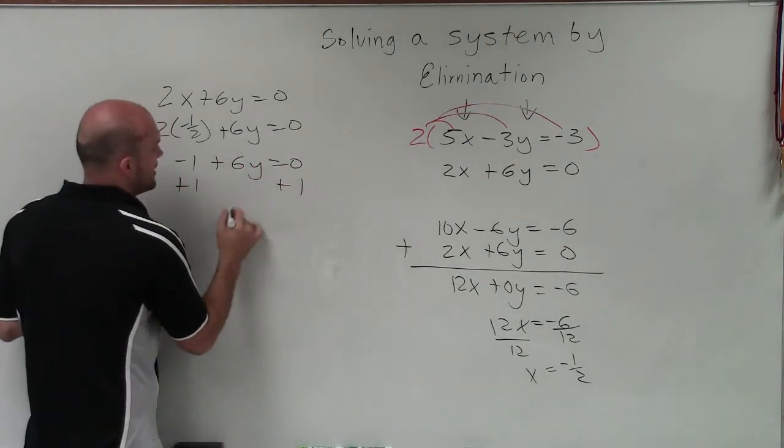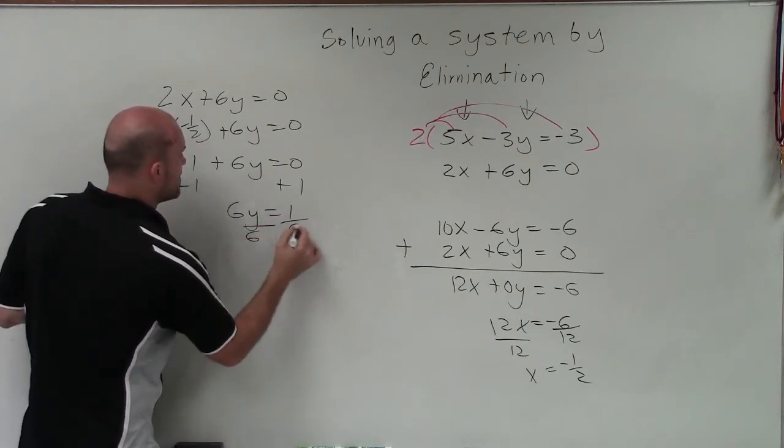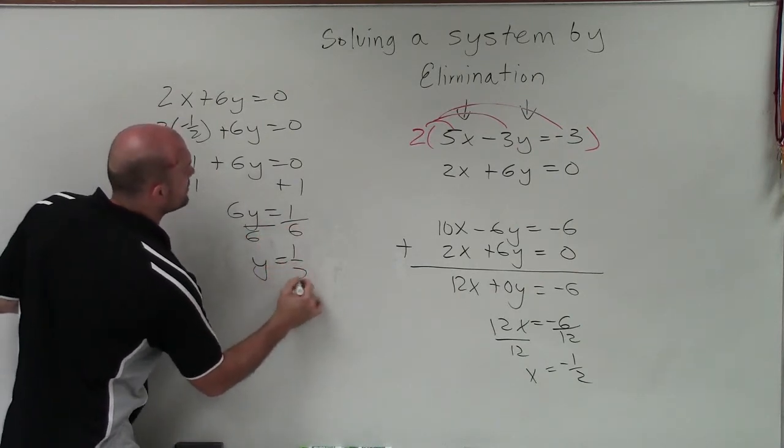Add the 1. So I have 6y equals 1. Divide by 6. Divide by 6. Y equals 1 sixth.